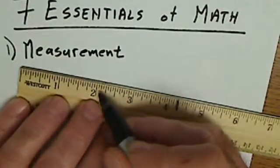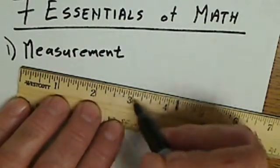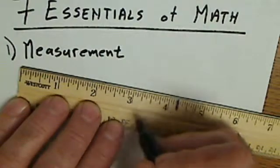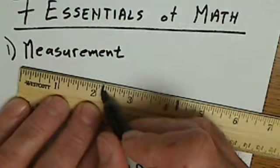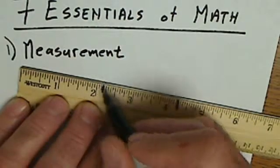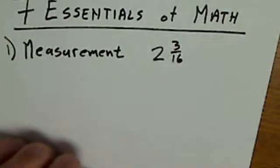If I'm looking at a ruler here, I count up how many little marks are between an inch. There are 16. Every mark is a sixteenth of an inch. So if I'm looking at this mark right here, it is three marks over. So this measurement would be two and three sixteenths.